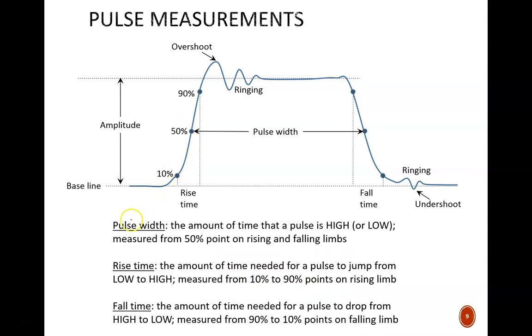The width of a positive pulse, the type pictured here, is defined as the amount of time that the waveform is high measured from the 50% point of the rising limb to the 50% point on the falling limb.